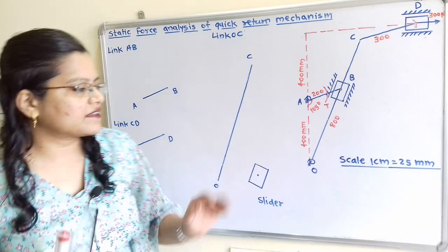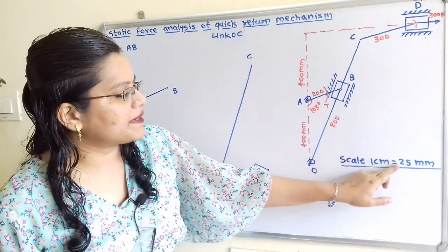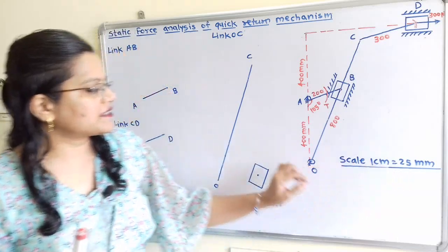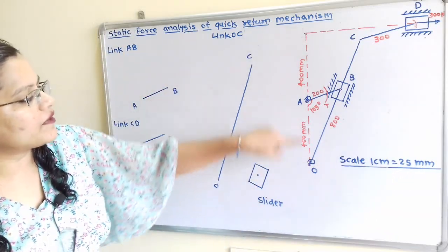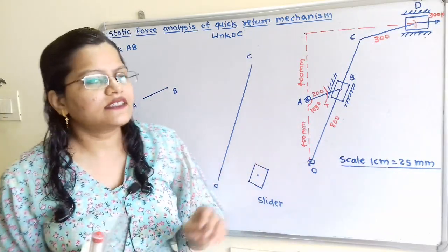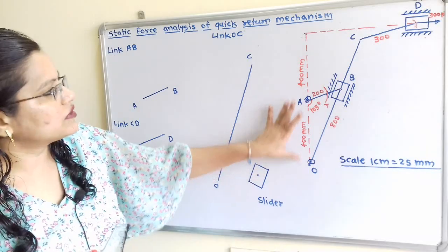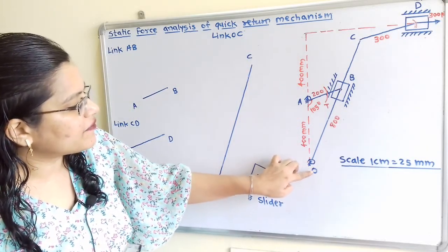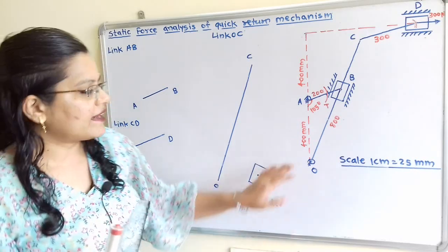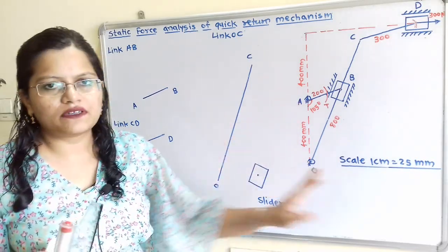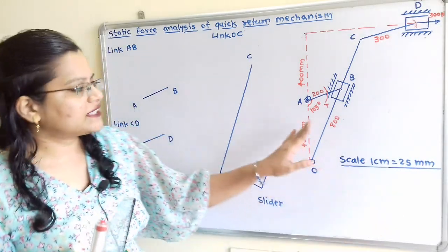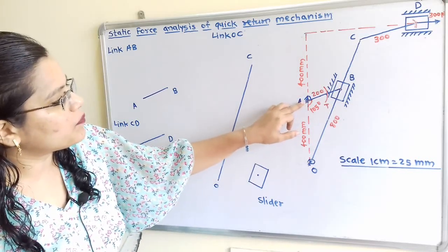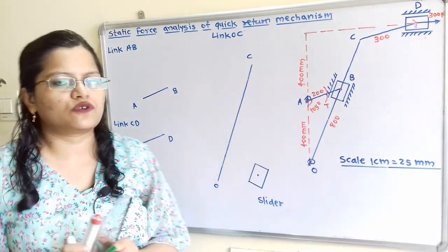We will consider a suitable scale: 1 cm is equal to 25 mm. So as per this scale we have to draw one vertical line that is 32 cm. At the initial position we take fixed point O, and then at 400 mm — so as per this scale at 16 cm — we take point A, which is also fixed.